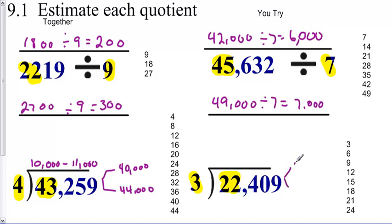So my two estimates, 21,000 and 24,000. 21,000 divided by 3 is 7,000. Add my zeros. 24,000 divided by 3 is 8,000.